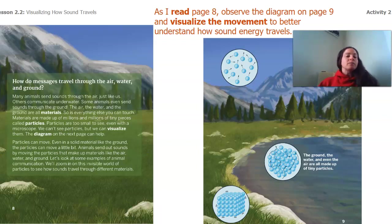So page eight, how do messages travel through the air, water and ground? Many animals send sounds through the air, just like us. Others communicate underwater. Some animals even send sounds through the ground. The air, the water and the ground are all materials. So is everything else you can touch. Materials are made up of millions and millions of tiny pieces called particles. Particles are too small to see, even with a microscope. We can't see particles, but we can visualize them. The diagram on the next page can help.